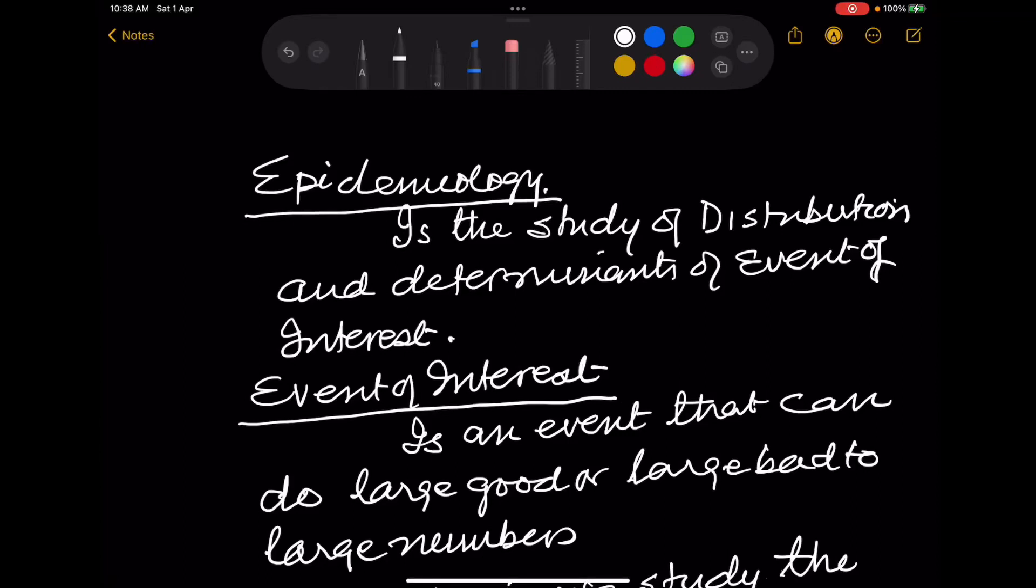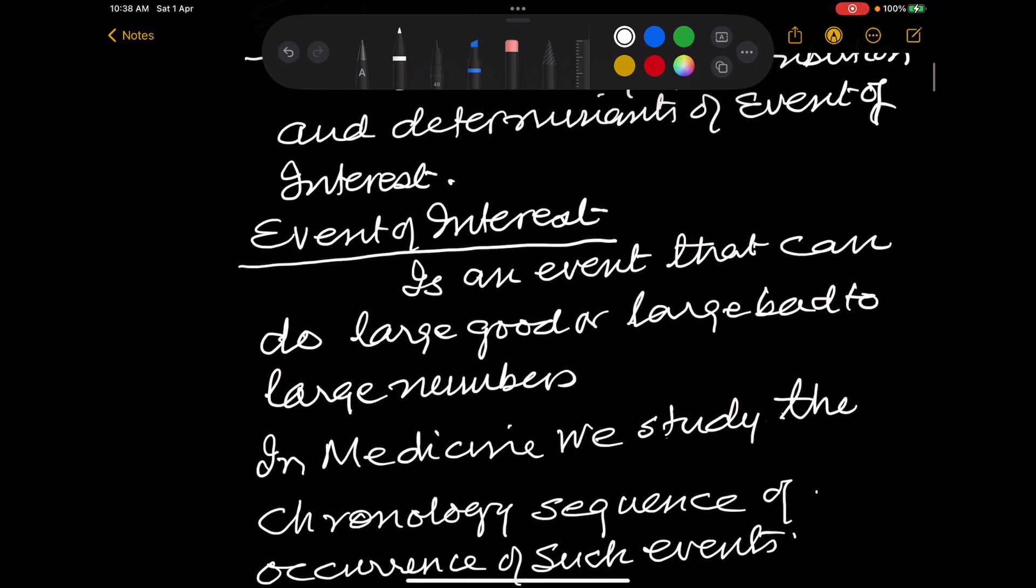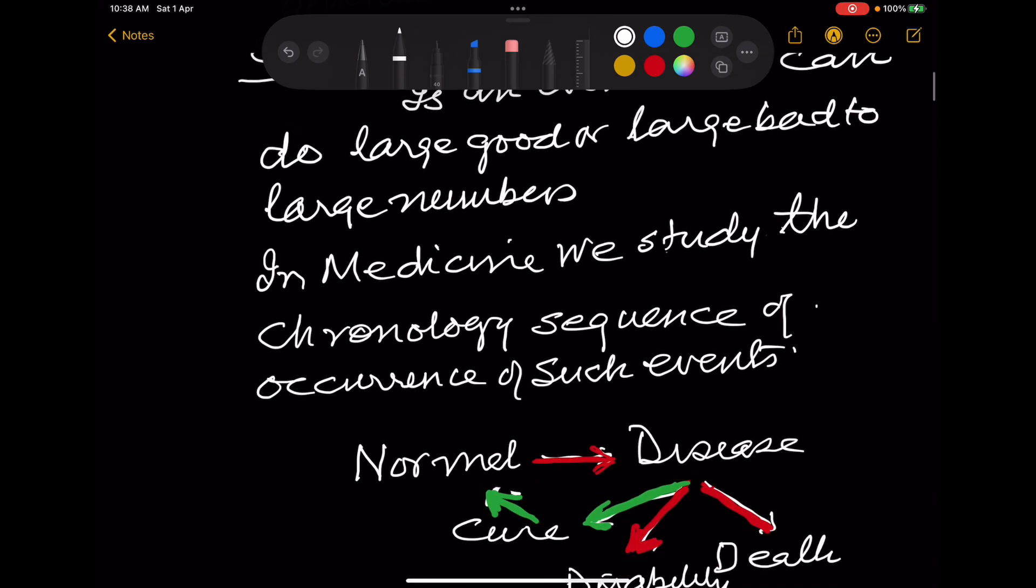Epidemiology is the study of distribution and determinants of the event of interest. What is event of interest? It is an event that can do large good or large bad to large numbers. In medicine we study the chronology or sequence of the occurrence of such events because they are events of interest.